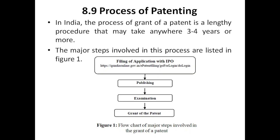For applying for a patent, you have two types: one is online application and another one is offline application. As per your syllabus, we will be explaining about the offline application. In India, there are four patent offices, categorized into southern, northern, eastern, and the rest part of India — that we will discuss in a later stage.